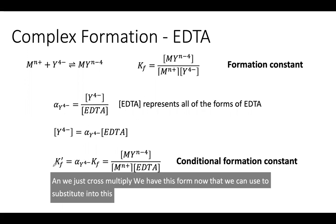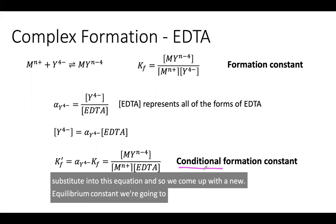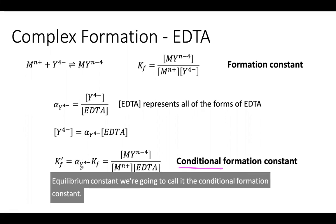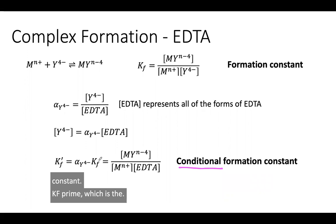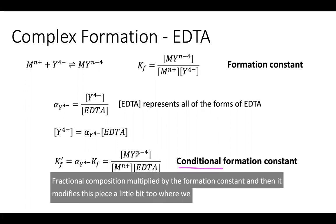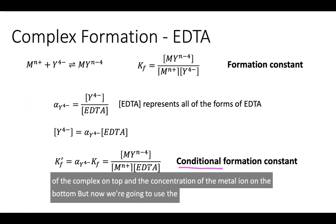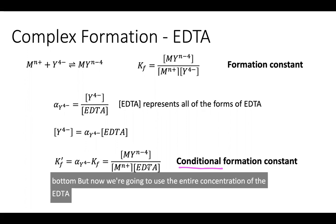We just cross multiply, and we have this form that we can use to substitute into this equation. We come up with a new equilibrium constant, the conditional formation constant, K'f, which is the fractional composition multiplied by the formation constant. This modifies this piece so we still have the concentration of the complex on top and the concentration of the metal ion on the bottom, but now we use the entire concentration of the EDTA, not just the fully deprotonated form.